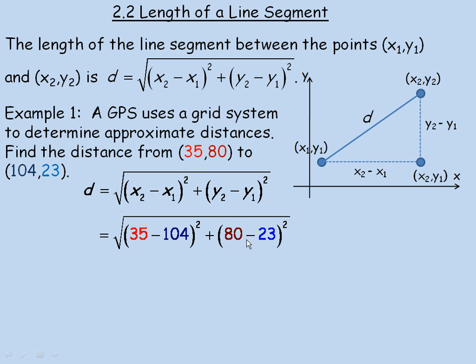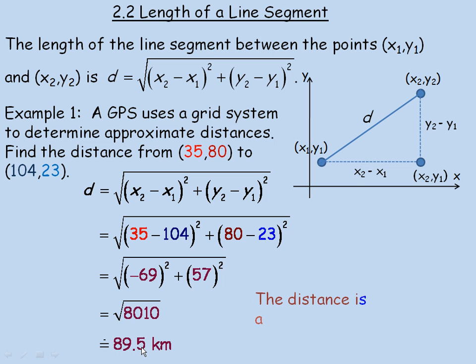80 take away 23 is my difference between my y values over here. So 35 minus 104 is negative 69, and 80 minus 23 is 57. So that's the values that are squared here. Negative 69 squared plus 57 squared works out to 8,010 underneath the square root. And that's approximately 89.5 kilometers. This is the exact distance. 89.5 is the approximate distance between those points. And since we're asked for approximate distances, there's nothing wrong with changing this to 89.5 kilometers. So the distance is approximately 89.5 kilometers.